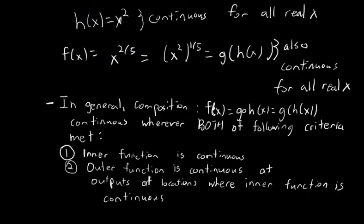In general, a composition of functions f of x equals g of h of x is continuous wherever both of the following criteria are met: the inner function h of x is continuous at those points, and the outer function g is continuous at the outputs of the locations where the inner function is continuous.